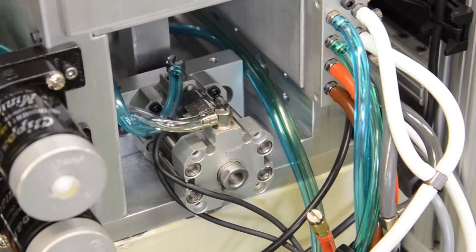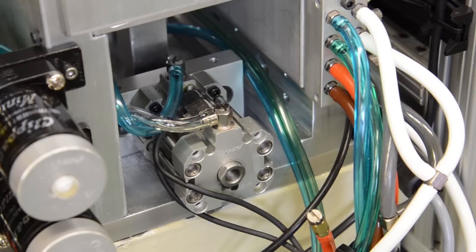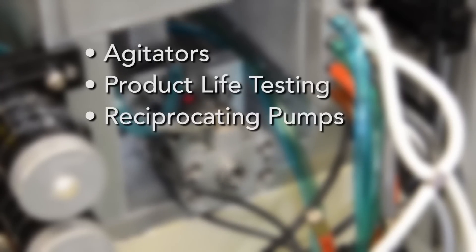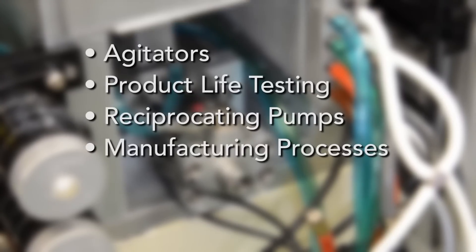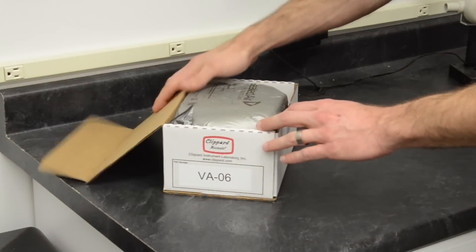Cycling a double acting cylinder is necessary in many applications including agitators, product life testing, reciprocating pumps, and manufacturing processes. The VA-06 makes this easy.